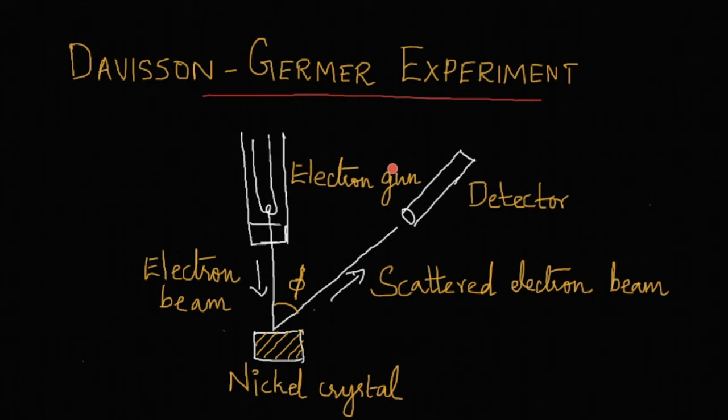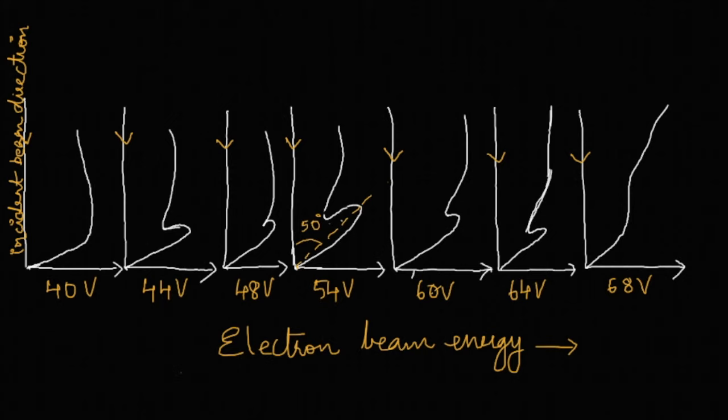The intensity of the electron scattered is calculated as a function of this latitude angle phi, and we plot different graphs that show the variation of intensity of the scattered electron as a function of phi for different accelerating potentials. Starting from 40 volt accelerating potential to 68 volt, we drew different graphs. On the y-axis we have the incident beam direction. You can see from the graph that there is a small bump that arises. A small bump begins to appear in the curve at 44 volt of electron beam.